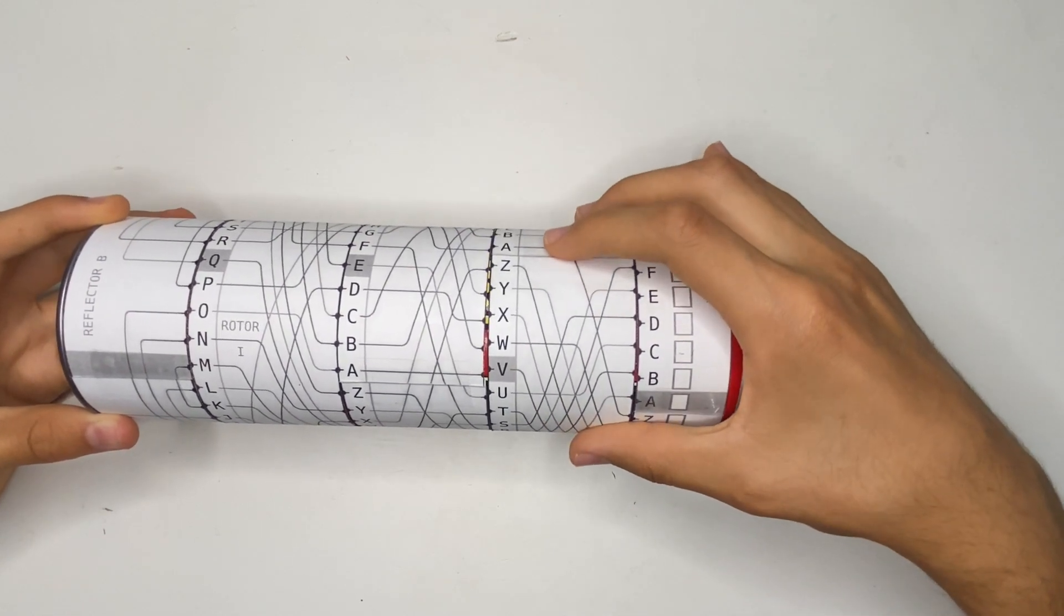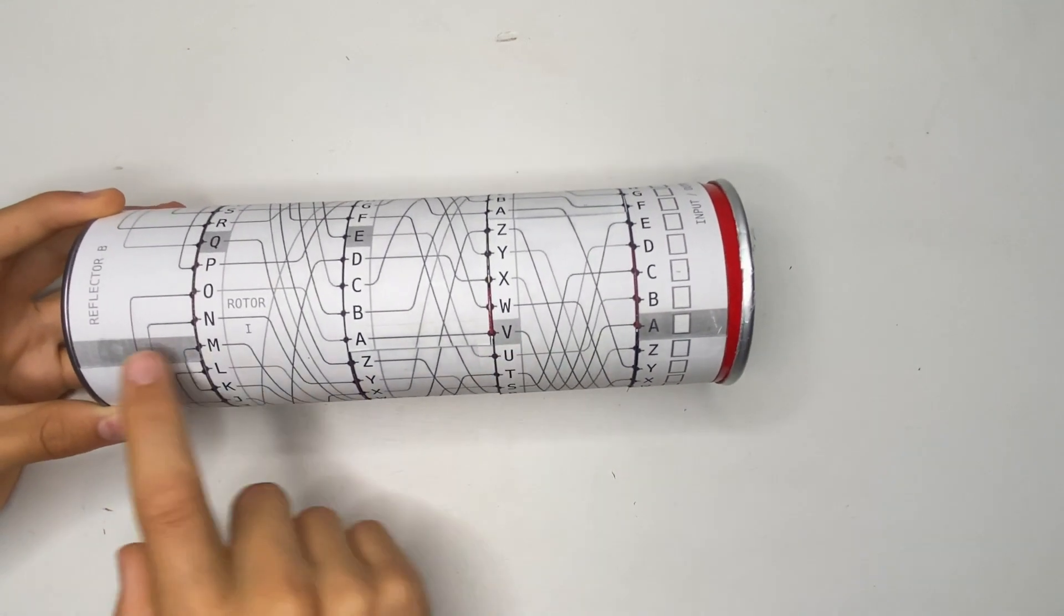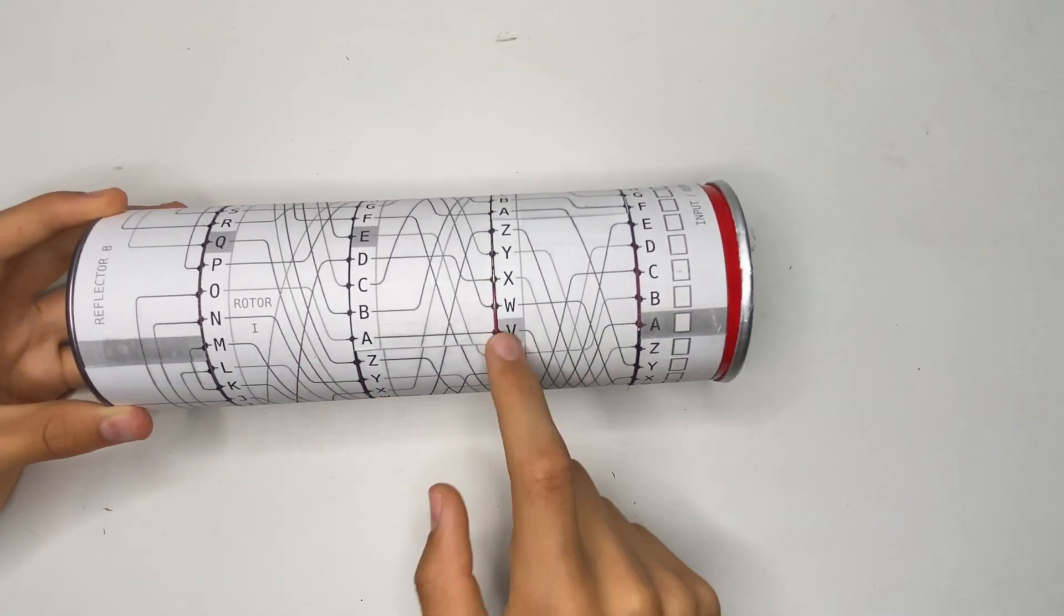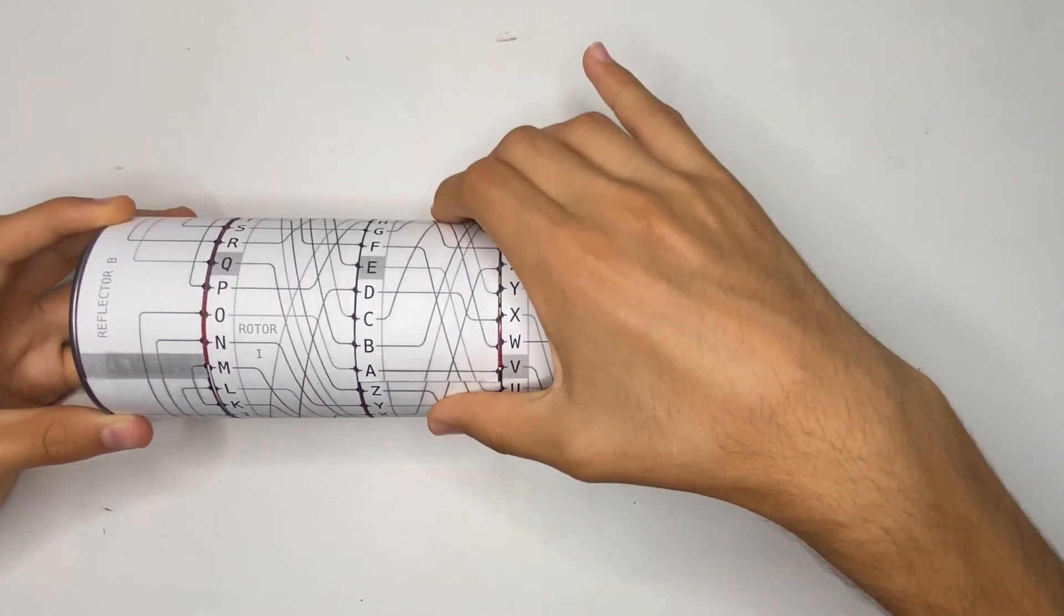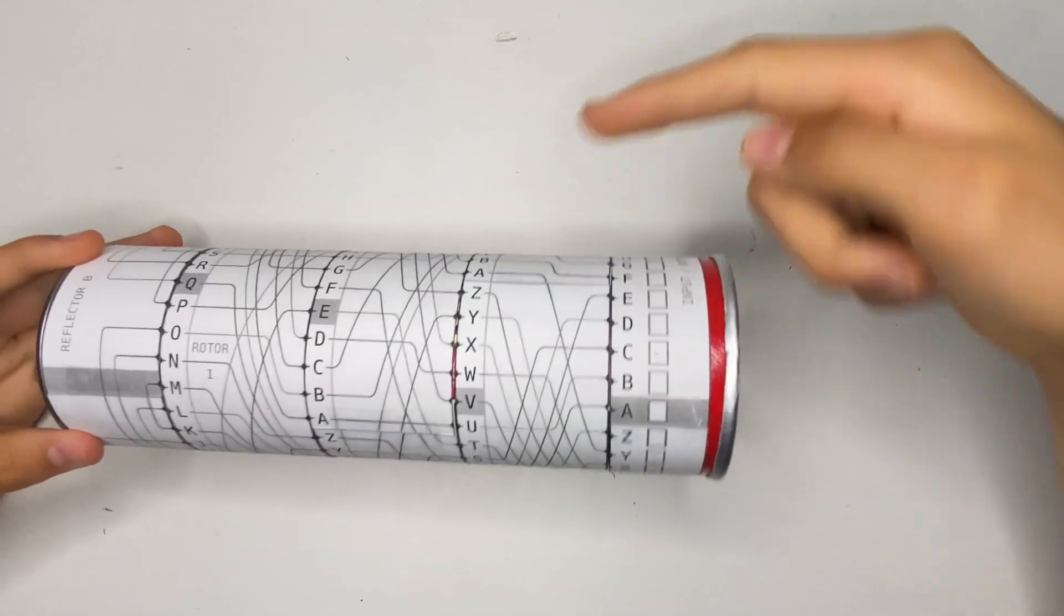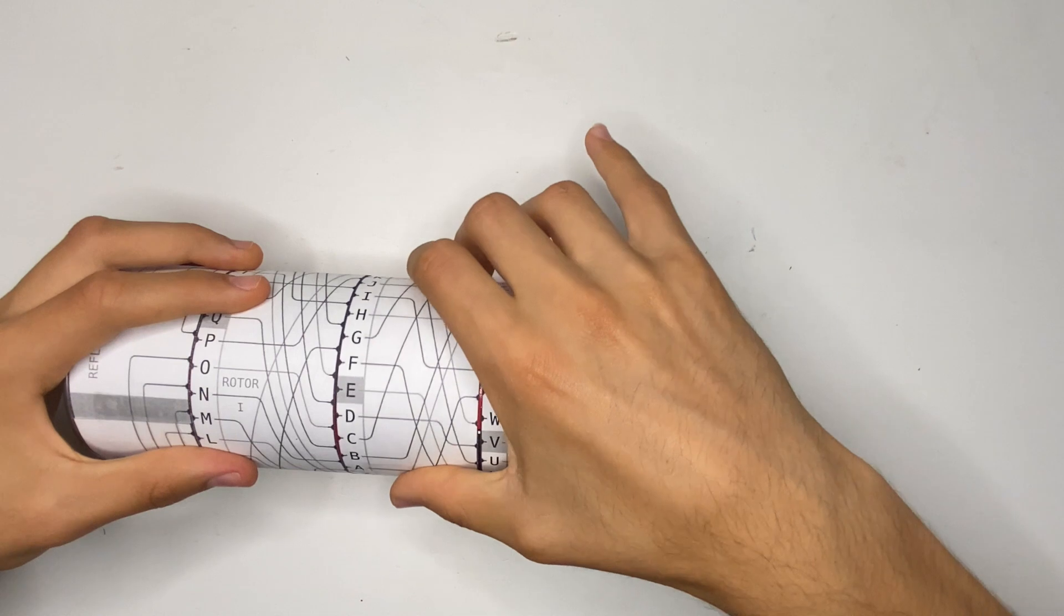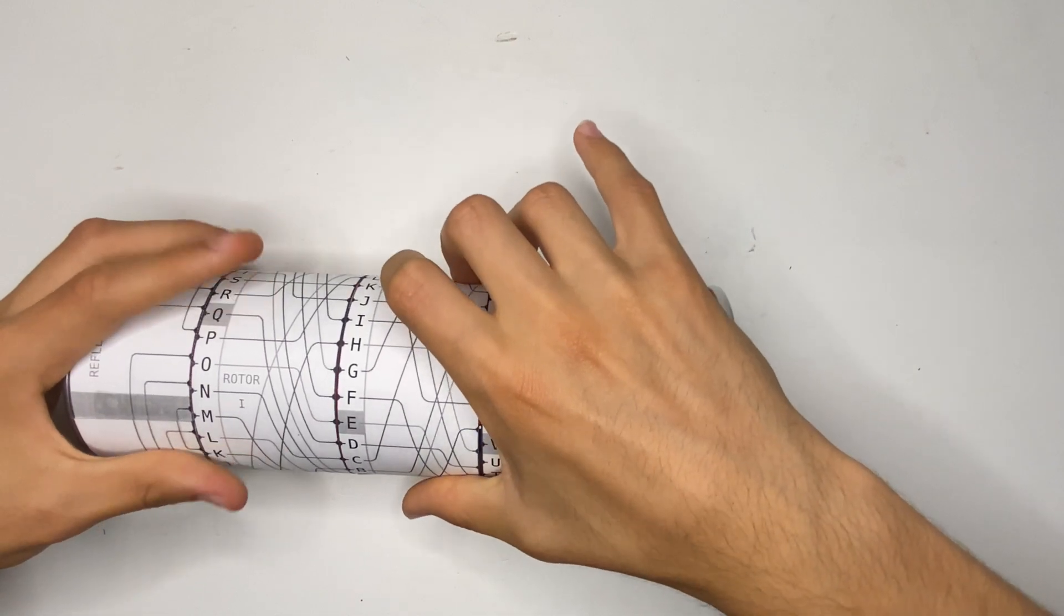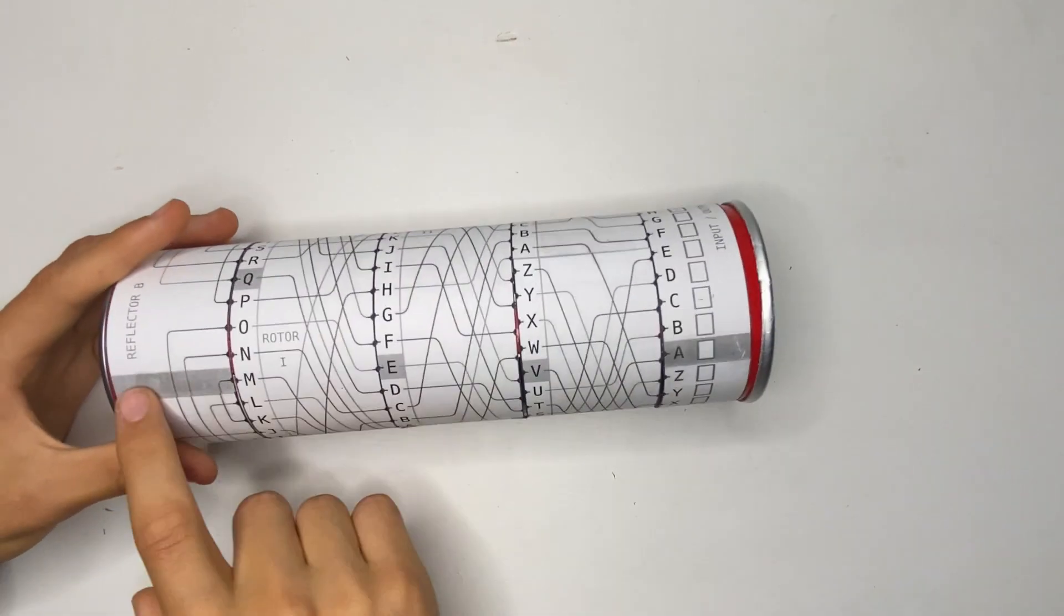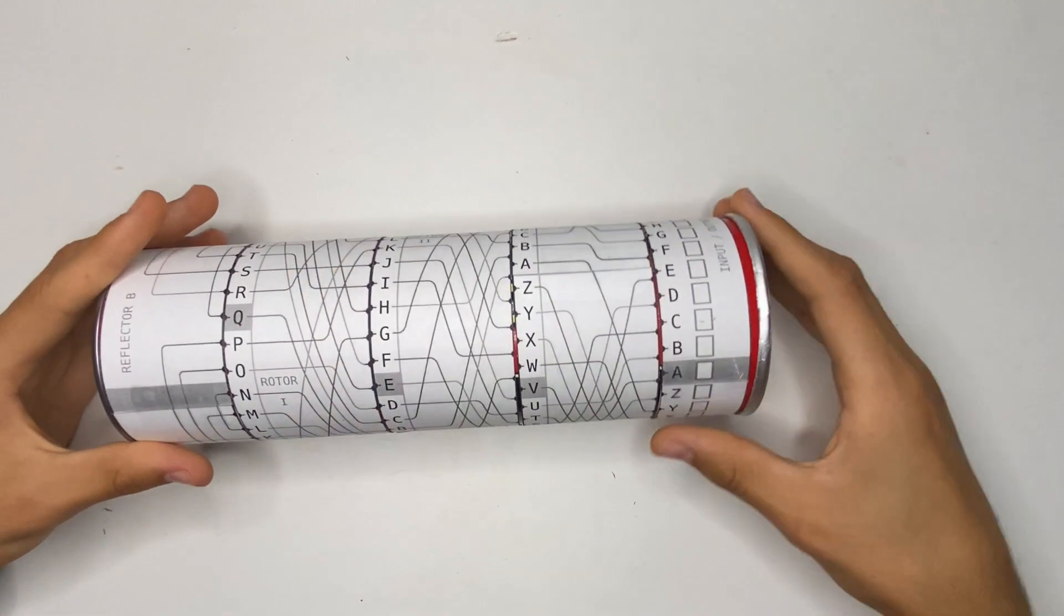So when it ticks down, when the gray tab here reaches this middle line, that is when we're going to tick this down by one. And then when we finally get back to here, we will tick this down again and again and again.